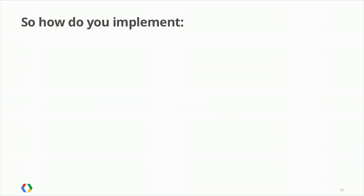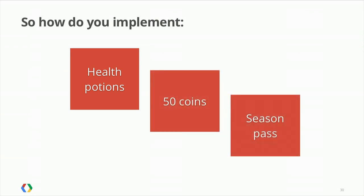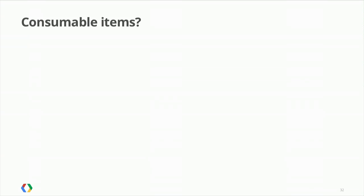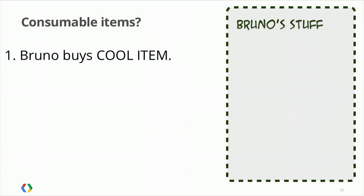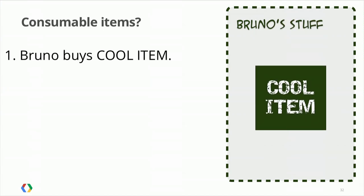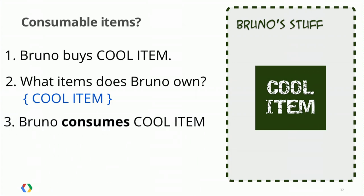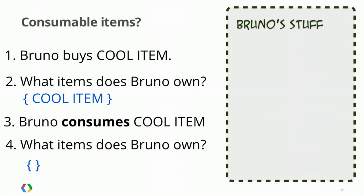Sometimes you don't want a purchase to be forever. You want to implement consumable items like health potions, gold coins that go into the player's wallet and then disappear, or things that expire like season passes. This is what unmanaged items were used for in v2, but there are no unmanaged items in v3 — instead, we have the consumption APIs. When you buy a cool item, it appears in your Google Play inventory. When you tell the API to consume it, the item goes up in flames and disappears. Consumption is the opposite of a purchase.